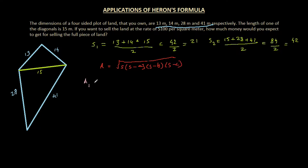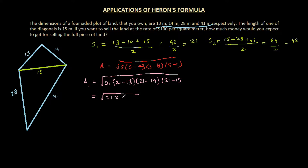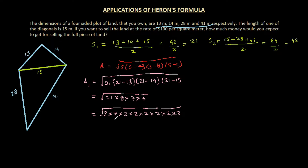For triangle one with S = 21 and sides 13, 14, 15: area equals the square root of 21 times (21 minus 13) times (21 minus 14) times (21 minus 15), giving the square root of 21 times 8 times 7 times 6. Breaking into prime factors: 3×7, 2×2×2, 7, and 2×3. Taking pairs: 2, 3, 7, and 2 remain outside the root. So 3 times 7 is 21, times 2 is 42, times 2 is 84. The area of triangle one is 84 square meters.